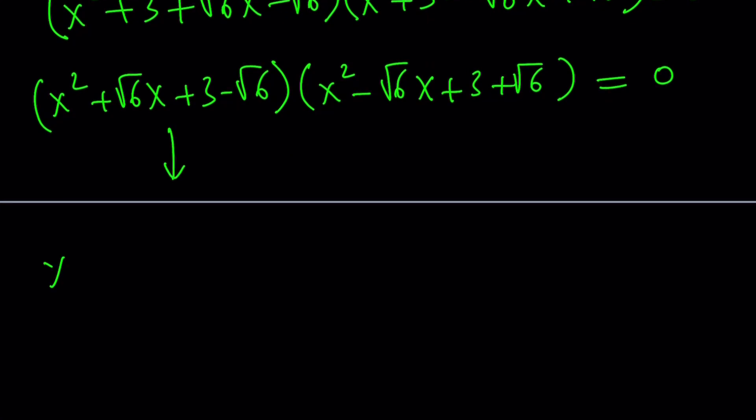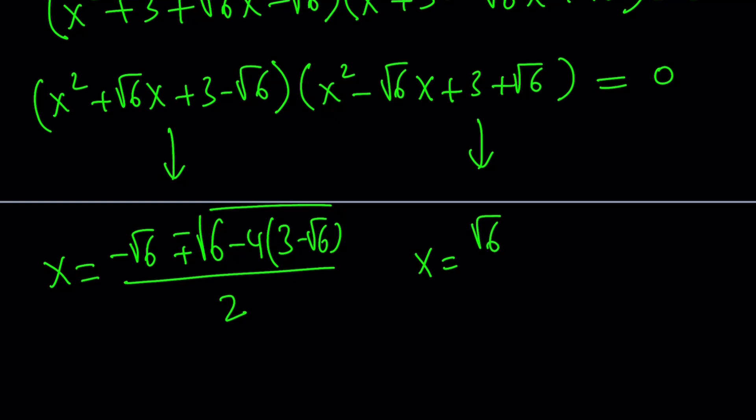The first one gives me the following: negative square root of 6 plus minus the square root of b squared, which is 6, minus 4ac divided by 2. The second one gives me x equals negative b plus minus the square root of b squared minus 4ac. a is 1, so I'm just skipping that one. Divide by 2a, which is 2. Awesome. We should be getting four solutions, right? But remember,